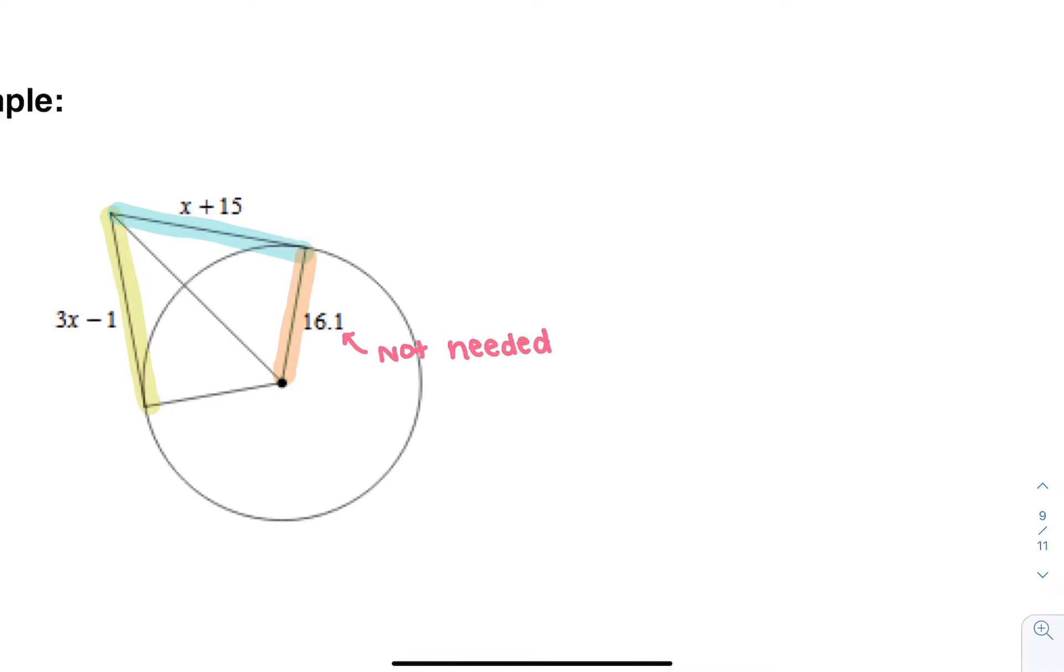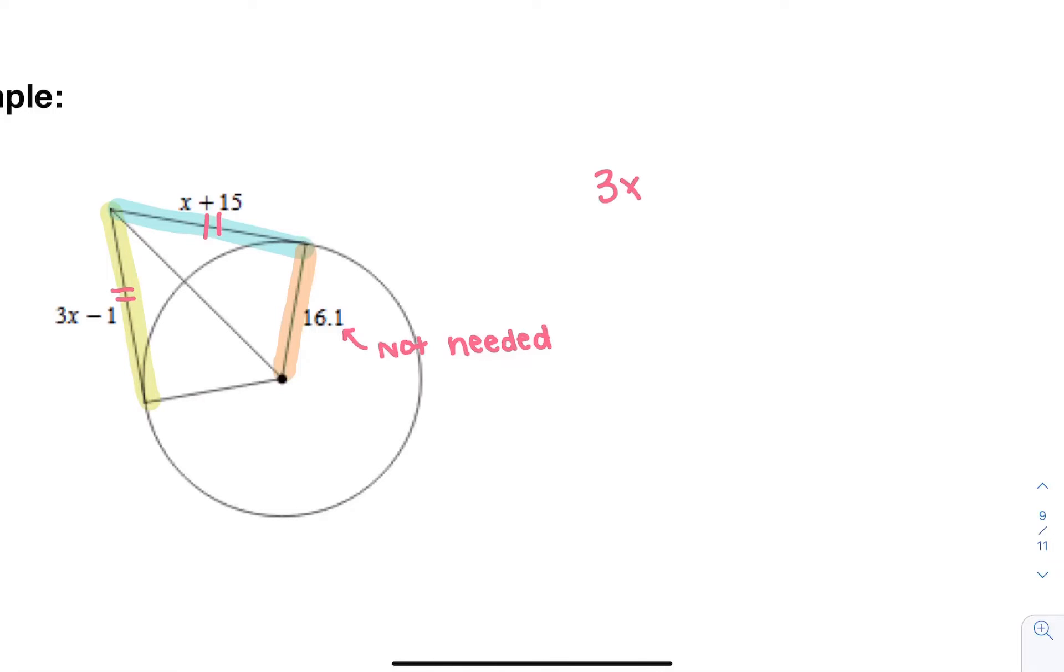For this problem, if we see this tangent line intersecting this tangent line, we know they're equal. If they're equal, set them equal. 3X minus 1 equals X plus 15. I'm going to subtract X from both sides and add 1 to both sides. I get 2X equals 16, which means X equals 8.